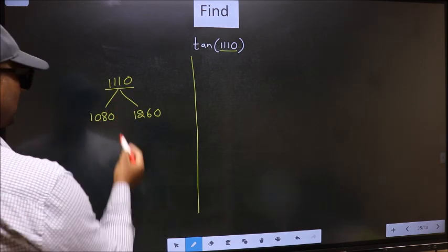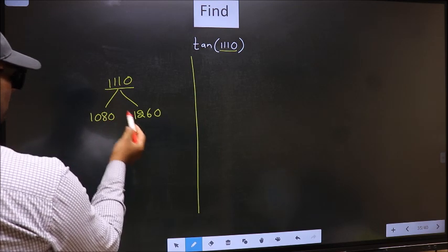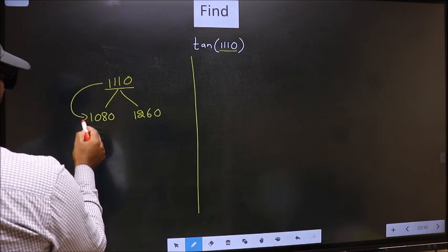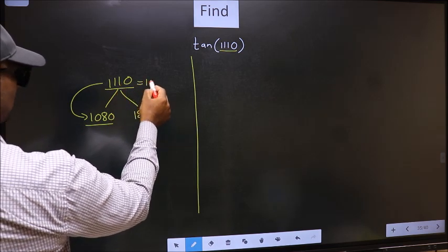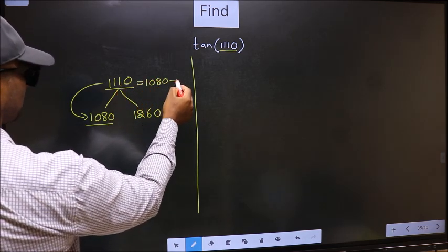Next, 1110 is close to which number? This is close to 1080. So in place of this, now we should write 1080 plus 30.